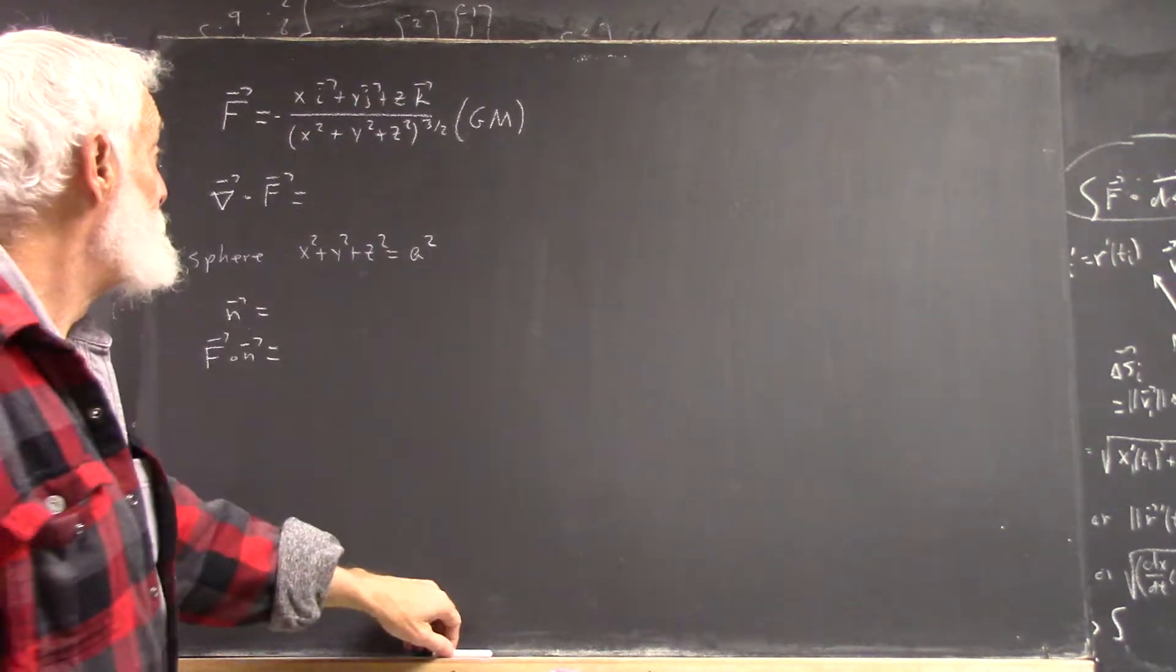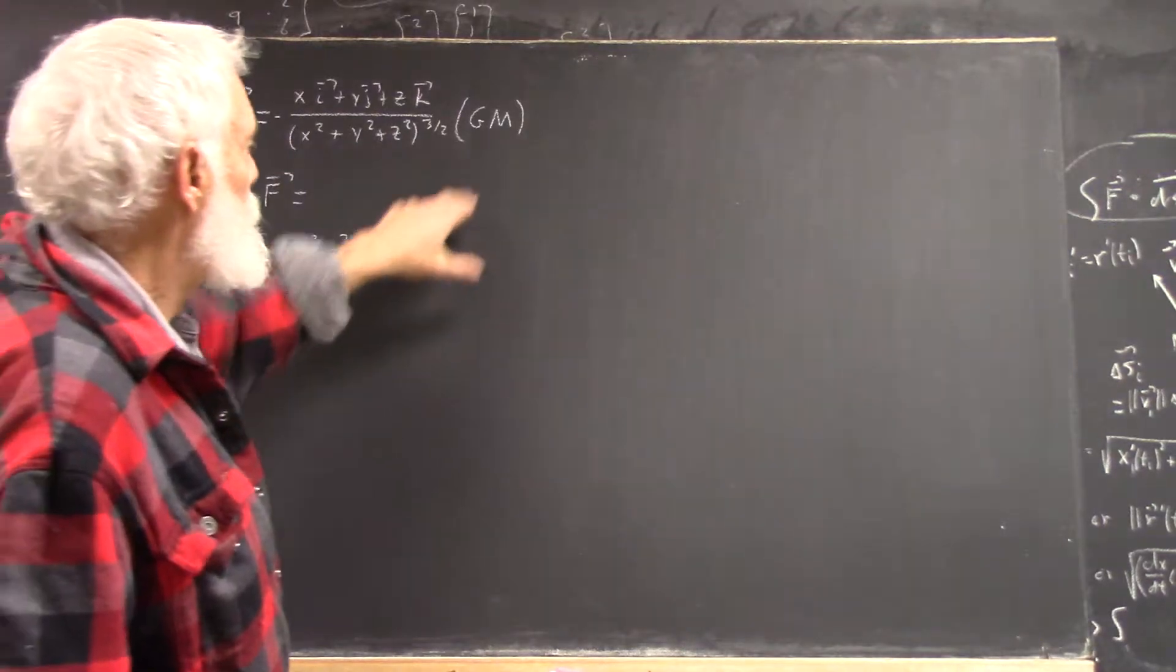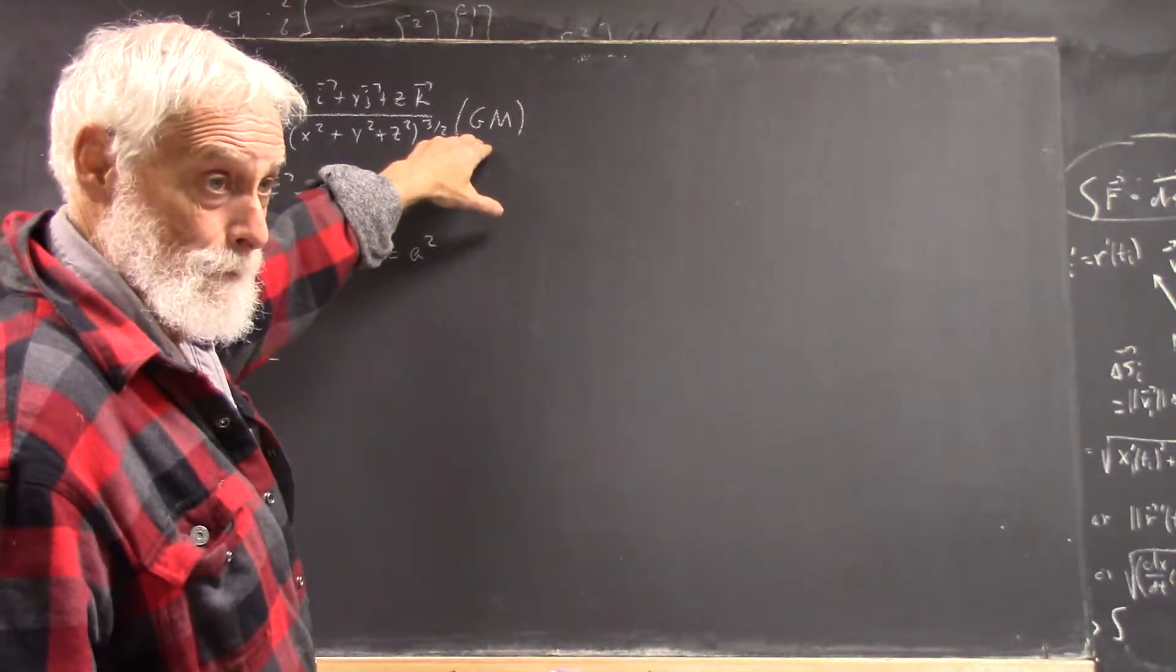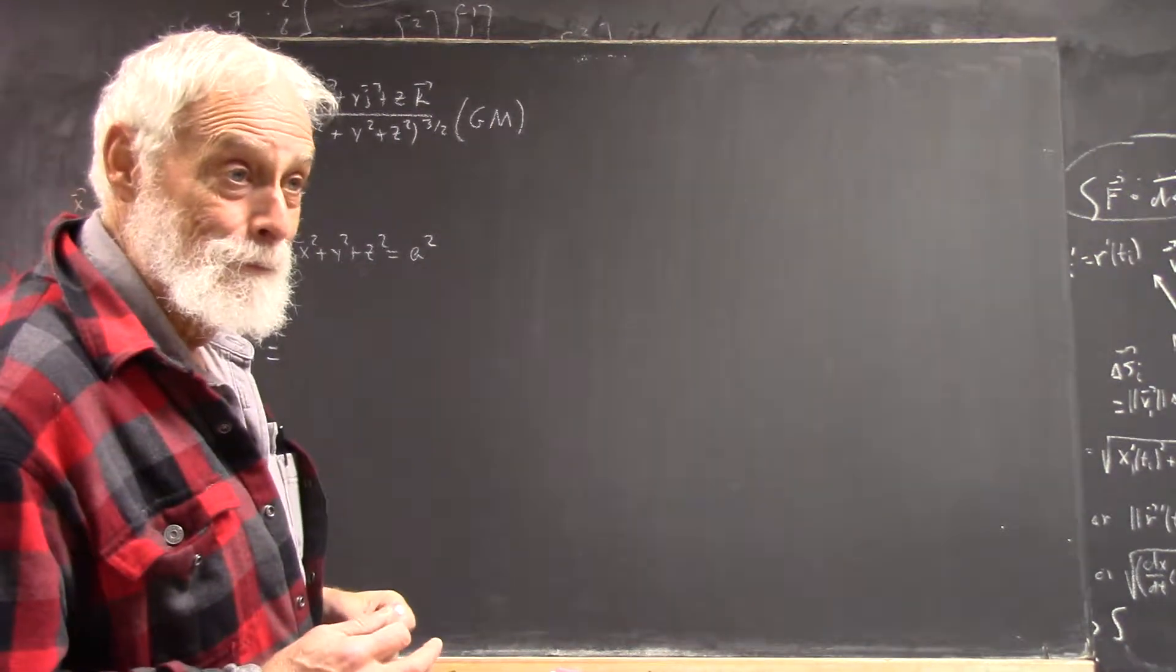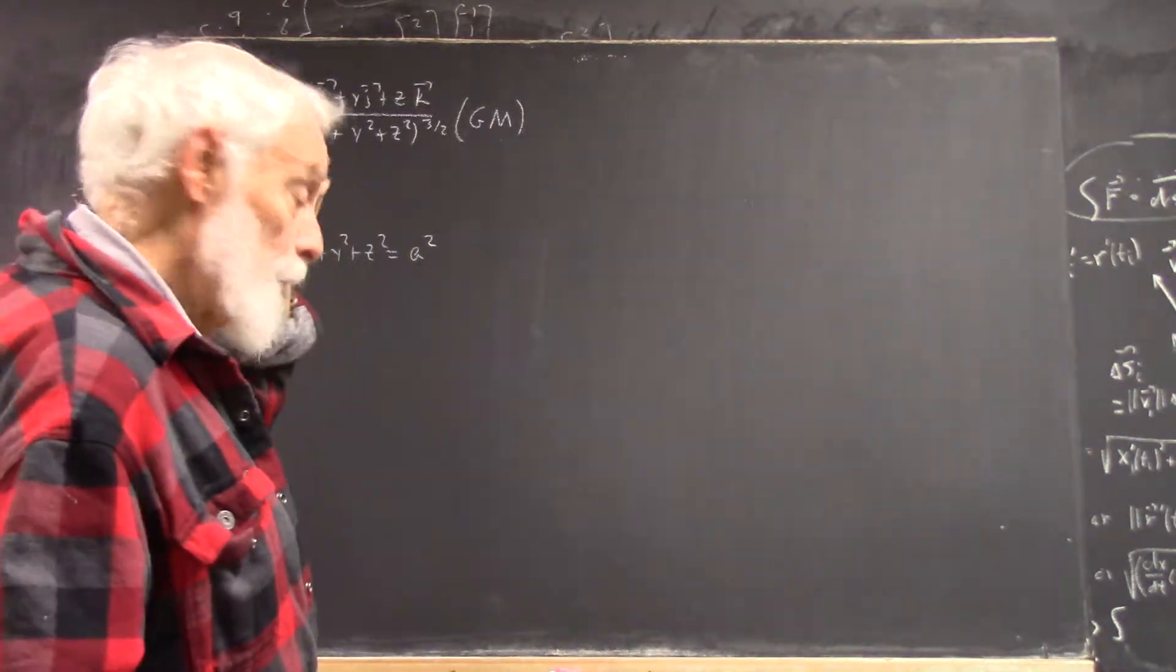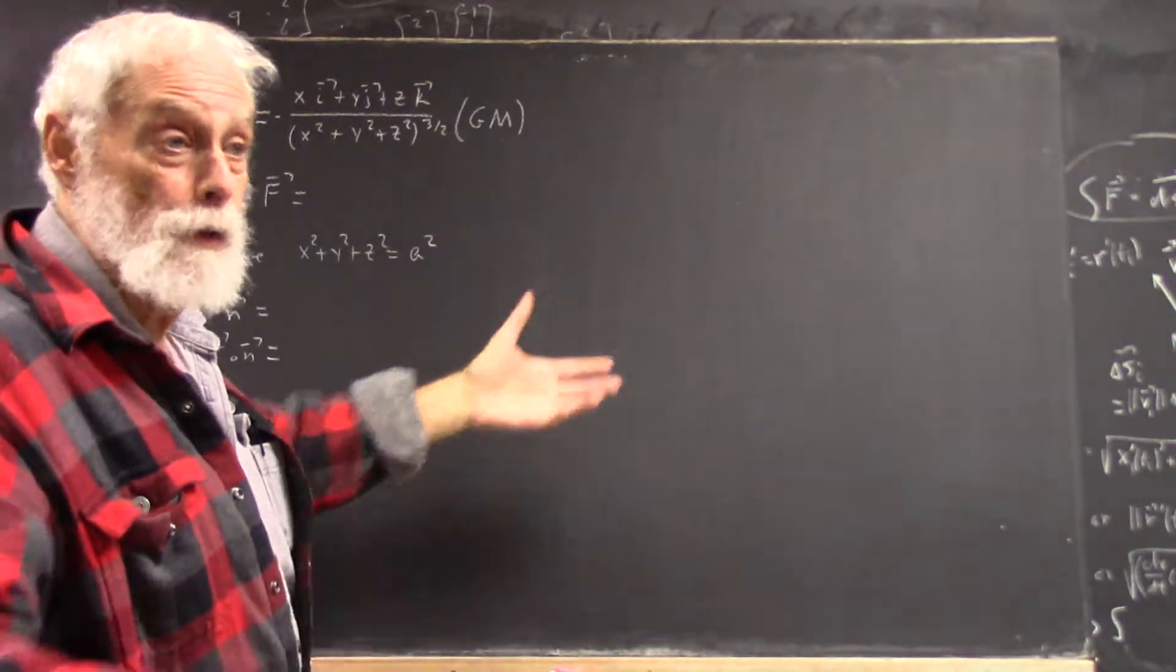Now implicitly, a is going to be greater than the radius of the planet. Although it would apply inside the planet, you'd have to have the mass density function. And maybe we'll actually look at that, an approximation of the Earth's mass density.